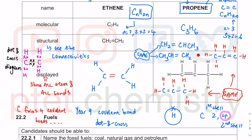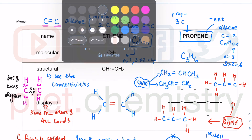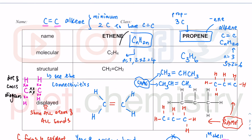Going from C2H4 to C3H6, you add one carbon and two hydrogens — that is again adding CH2. For every member of the alkene series you add another CH2, so the next member C4H8 adds another CH2 to the previous alkene, and so on.